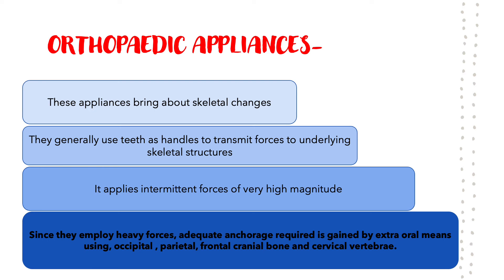Now discussing orthopedic appliances — 'orthopedic' means it brings about skeletal changes. The only difference is it uses teeth as handles to transmit forces to the underlying skeletal structures. For example, if you have an upper jaw that is very small and needs to be brought forward and downwards, you would use an orthopedic appliance where the upper teeth work as handles to transmit force to the upper jaw. The force applied is of an intermittent variety.